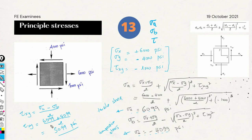Now that we have determined the maximum stresses acting on this infinitesimal section, we can predict failure either by normal stresses or by shear stresses. As mentioned, this depends on the nature of the material — whether it is ductile or brittle.